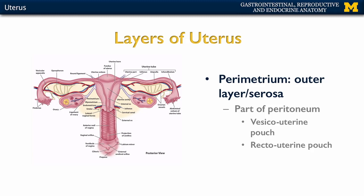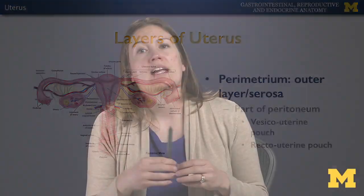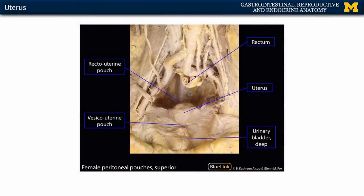Let's talk about the layers of the uterus. We'll start with the outermost layer, which is the parametrium — often referred to as serosa. What's important here is that this is part of the peritoneum, and you're going to have an association of the peritoneum with the other organs in this region, for the vesico-uterine pouch and the recto-uterine pouch.